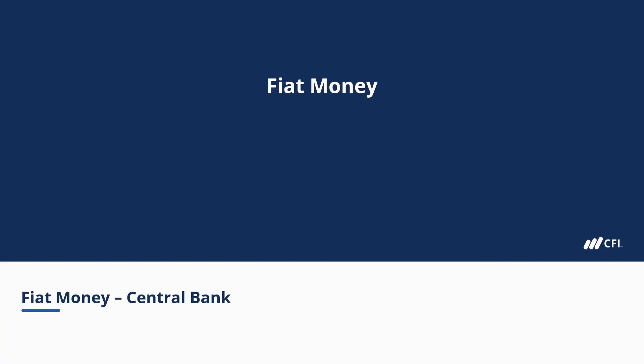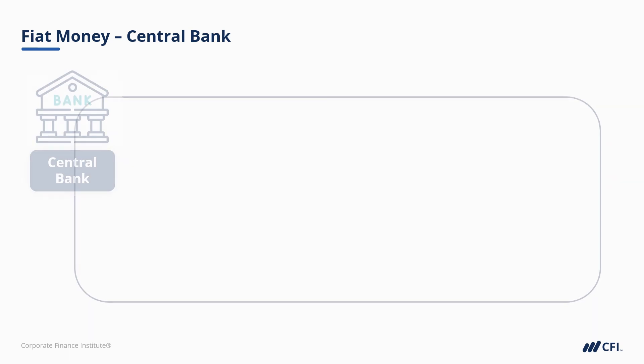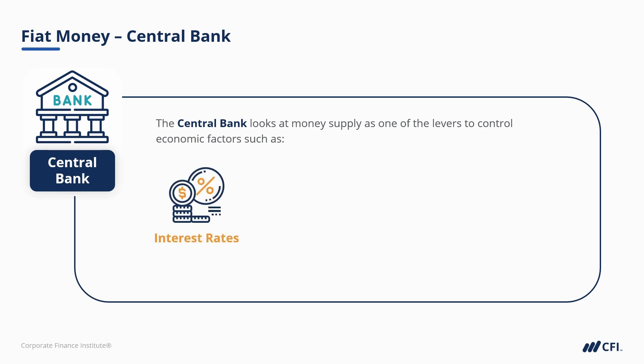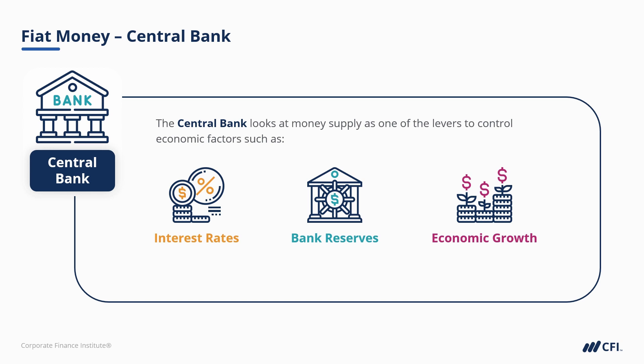Which brings us to the current state of money as we know it — fiat money. In other words, a piece of paper that is essentially a social construct based on trust. No longer is money physically worth the amount of the actual thing that is being exchanged, such as it was when gold coins were used as money, and no longer is money backed by something of value, such as when the world operated on the gold standard. Money is now just something that is printed or minted by the central bank or note-issuing banks of a jurisdiction. The central bank looks at money supply as one of the levers to control economic factors such as interest rates, bank reserves, and economic growth. By far the most important factor that governments look to control is inflation, and that's done mostly through policy rates that impact money supply.